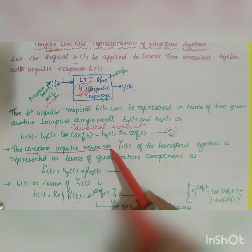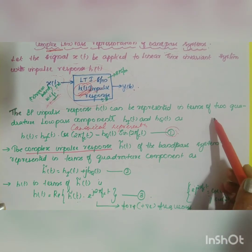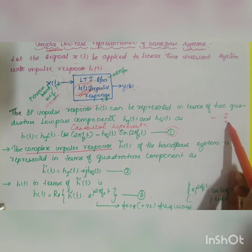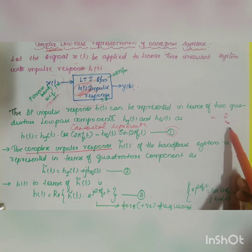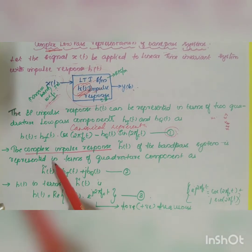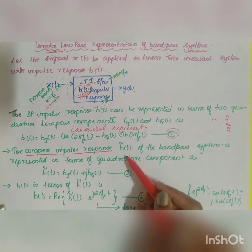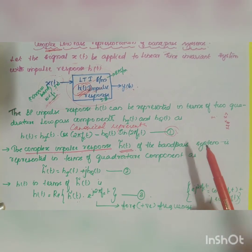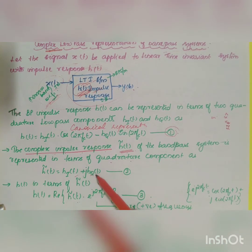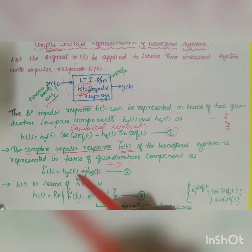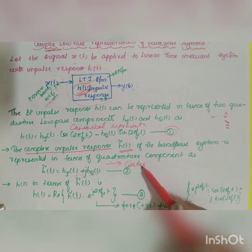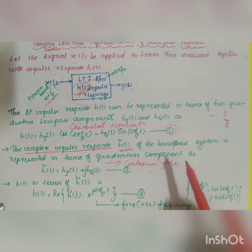Now, regarding the complex impulse response: in the last video we studied three sections — Hilbert transform (represented by x̂), pre-envelope (represented by x₊), and the complex envelope (represented by x̃ with a tilde). The complex impulse response h̃(t) of the band pass system is represented in terms of in-phase and quadrature components in Cartesian or rectangular form as: h̃(t) = h_i(t) + j·h_q(t). Let us take this as Equation 2.